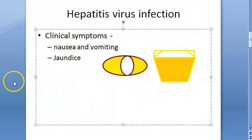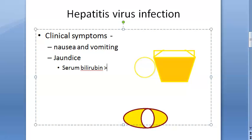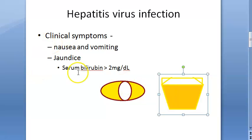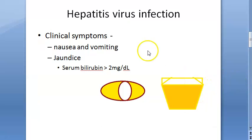When hepatitis occurs, clinical symptoms include nausea, vomiting, and jaundice — an increase in bilirubin levels. When serum bilirubin exceeds 2 milligrams per deciliter, it is called jaundice. The person will have icterus — yellowish sclera — and dark yellow urine. These are characteristics of jaundice, also called hyperbilirubinemia.